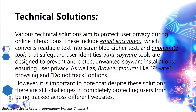Technical Solutions. Various technical solutions aim to protect user privacy during online interactions. These include email encryption, which converts readable text into scrambled ciphertext, and anonymity tools that safeguard user identities. Anti-spyware tools are designed to prevent and detect unwanted spyware installations, ensuring user privacy. Additionally, browser features like private browsing and do-not-track options are available. However, despite these solutions, there are still challenges in completely protecting users from being tracked across different websites.